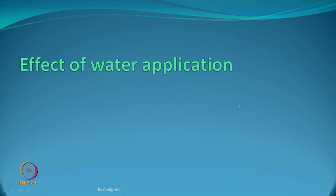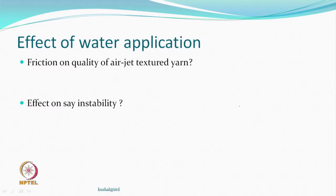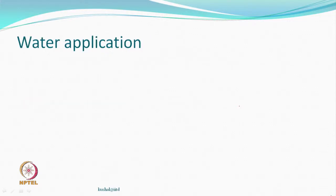Application of water is what we are going to talk about today — the effect of water application and how it improves or affects the quality. We will talk about two things: the effect on the quality of air jet textured yarns when a certain amount of water is applied to the yarn, and the effect on instability, which is the most important parameter for us. For water application, there is an attachment we call a water applicator.